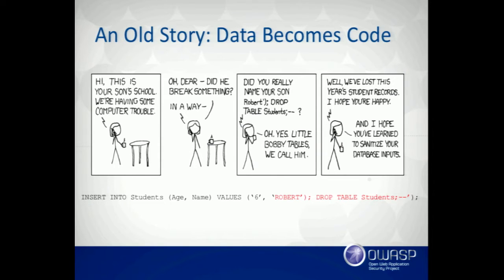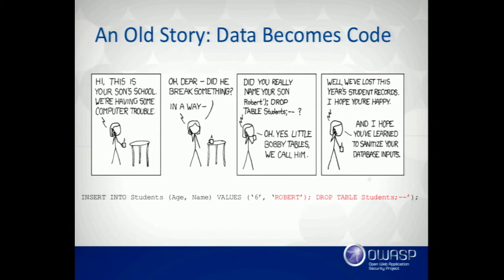SQL injection is very intuitive — you jump out of a data context into a code context, all within a single string. The execution of malicious code in a deserialization attack has nothing to do with the format of the message or what it looks like, so you can look at the attack and learn very little about how it's going to work. This also makes it very difficult to signature from a perimeter standpoint, and I think that's stunting our tribal maturity on the subject.